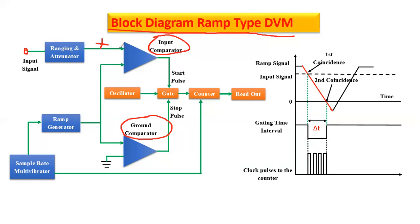Let's see how it works. Now we are talking about the input comparator and ground comparator. There are two comparators. When both inputs going into a comparator become equal in value, it will turn on and give a pulse. Here we have input X, and here is a ramp generator. The ramp generator generates the ramp signal continuously.